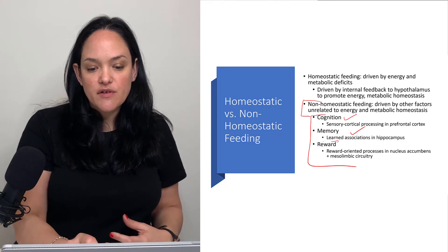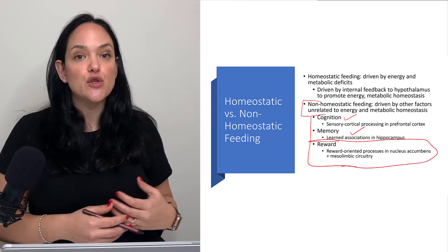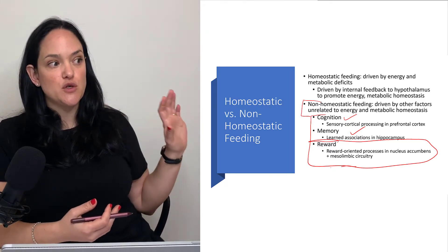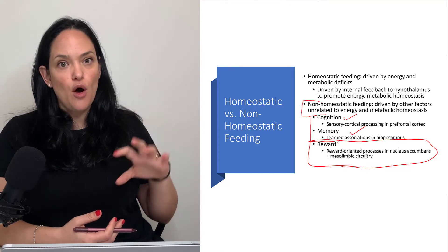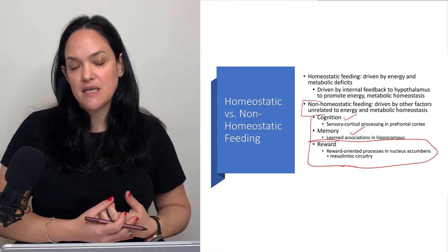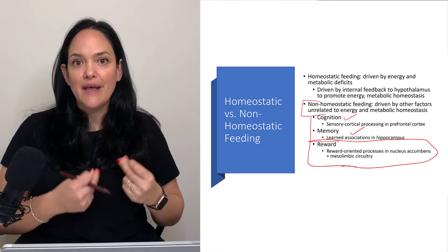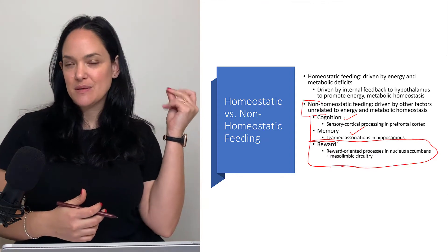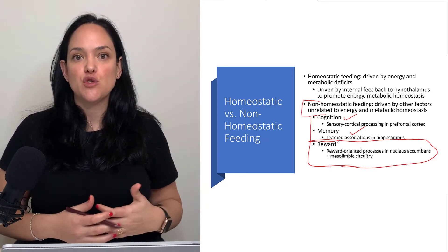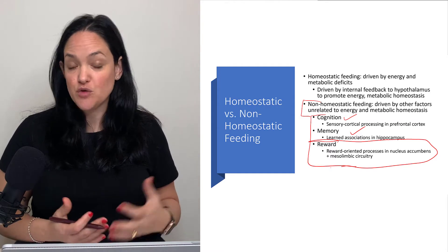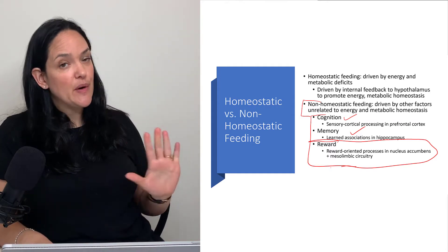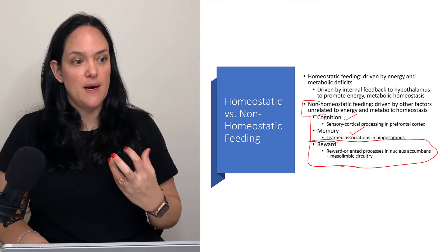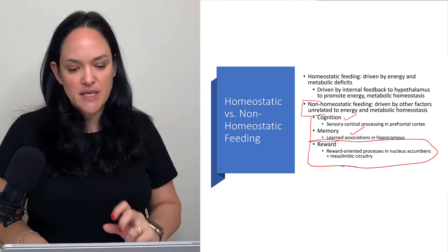Most of our focus today is going to be on reward circuitry, which is an area highly investigated with respect to drug misuse, but also might be compromised in individuals with obesity. Reward is about integrating behaviors and making sure those behaviors keep happening because we get a kind of high from certain behaviors or certain drugs. Some people argue food can have that same drug or addiction-type properties, though that's debated.